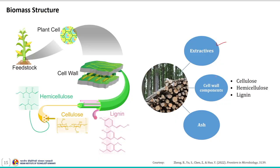After understanding biomass resources and selection criteria, let us discuss about the biomass structure. The biomass structure mainly consists of extractives, cell wall components and ash. The cell wall components mainly consist of cellulose, hemicellulose and lignin. The structures of cellulose, hemicellulose and lignin are shown here on the screen. Let us discuss each component of the biomass structure one by one.